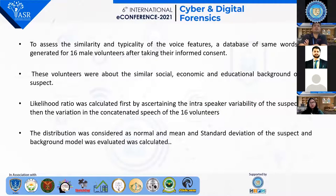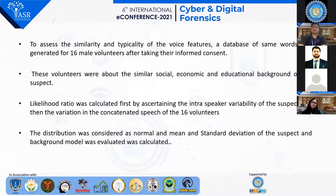The distribution was considered to be normal, and the mean and standard deviation of the suspect and the background model were evaluated and calculated. The likelihood ratio was calculated using the DNORM function in R software and the NORMDIST function in Microsoft Excel.